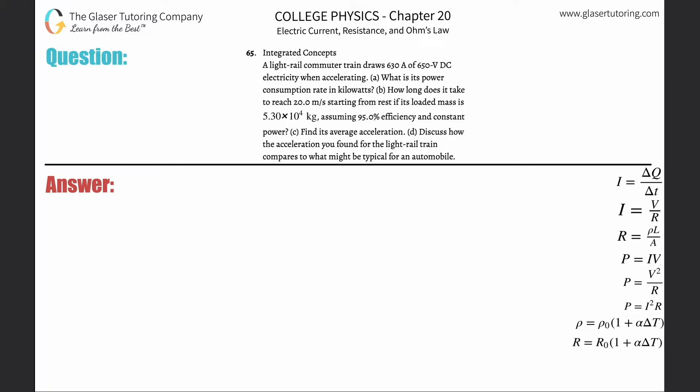Number 65, integrated concepts. A light rail commuter train draws 630 amps of 650 voltage direct current electricity when accelerating. Letter a: what is its power consumption rate in kilowatts? Simply, power is equal to current multiplied by voltage.